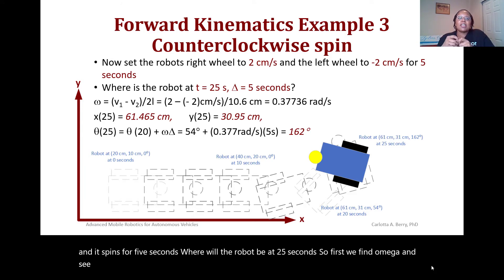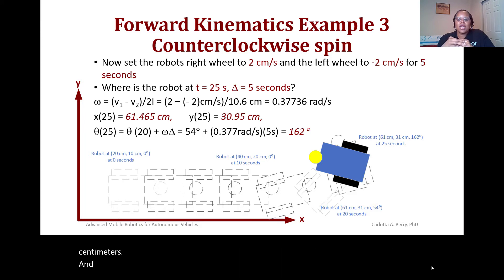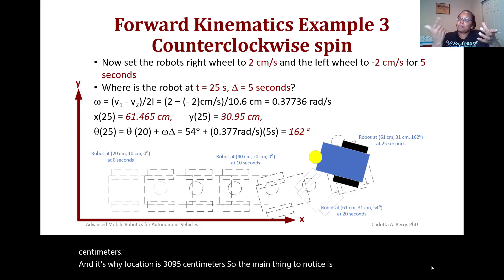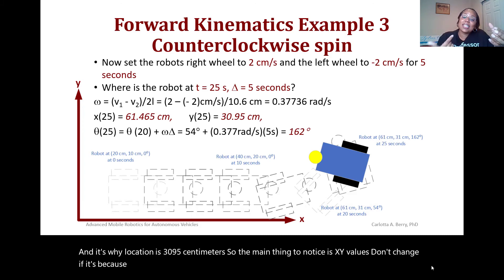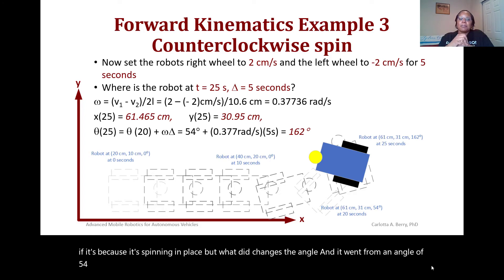The robot's x-location remains 61.465 cm and its y-location remains 30.95 cm — the key thing to notice is that the x and y values don't change because it's spinning in place. What did change is the angle: it went from 54 degrees to 162 degrees.